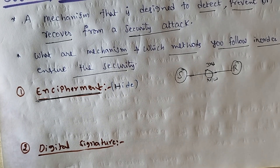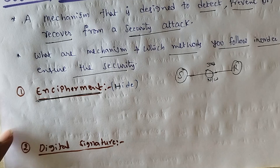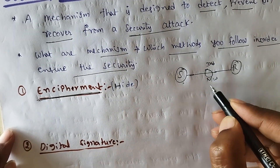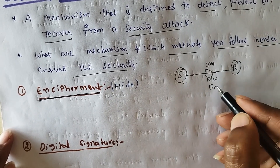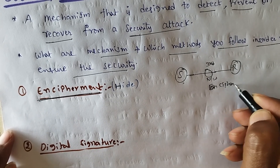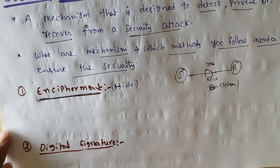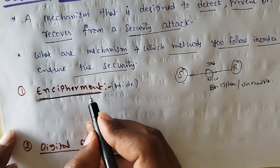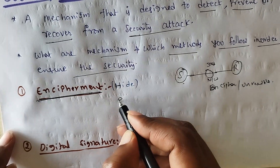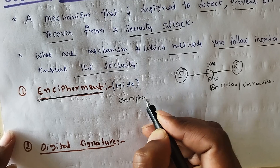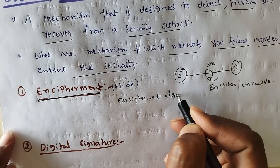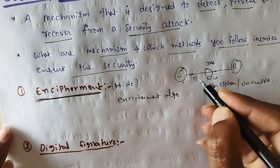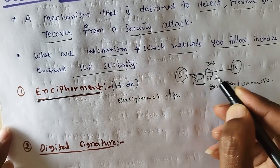In encipherment, the sender hides the original data. The sender sends a message that will be converted into ciphertext, which is an unreadable format, by using an encipherment algorithm. The encrypted message will then be sent from the sender to the receiver.